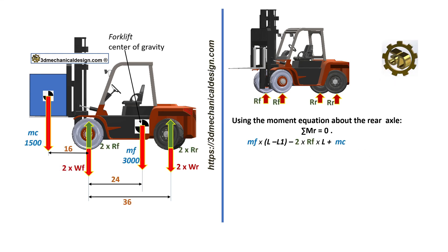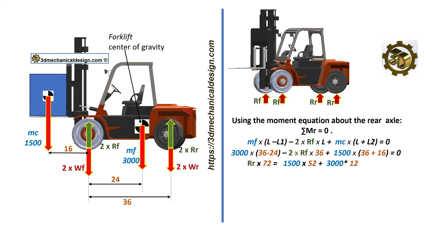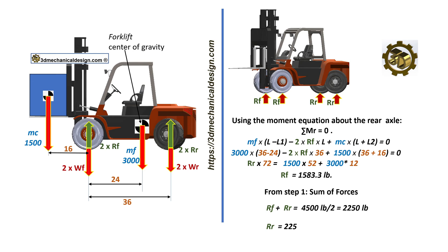Substituting the values, RF equals 1,583.3 pounds. Step 3: Calculating RR. From Step 1, we know that RF plus RR equals 2,250 pounds. Substituting the value: RR equals 2,250 minus 1,583.3 equals 666.7 pounds.